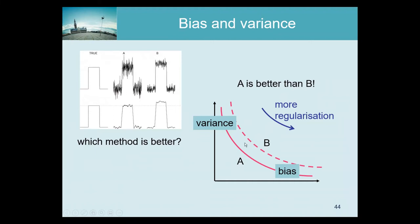For a particular variance, you can obtain that variance with lower bias for A than for B. Similarly, for a fixed bias, A achieves it with less variance than B. With those curves you have better arguments to say method A is preferable. If you just have a single point for each method it's very difficult, because you don't know how the curves run — they can behave differently, so you have to compute the full curves.